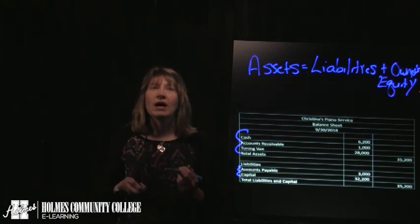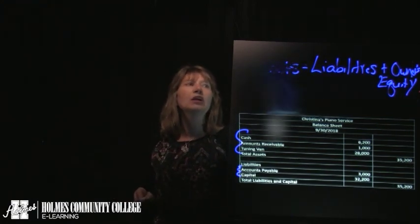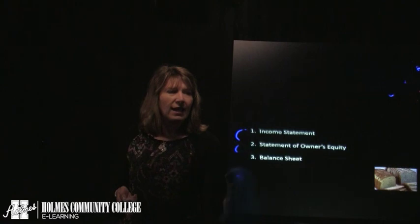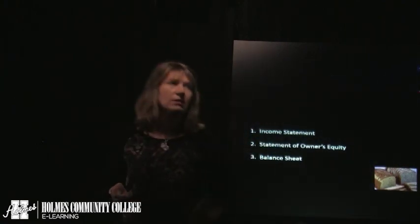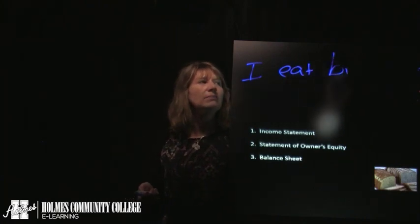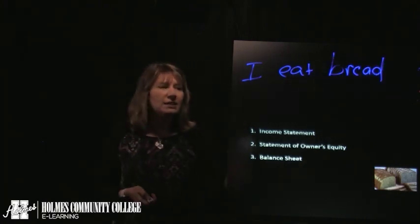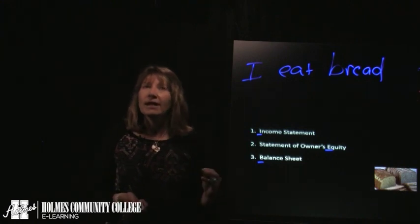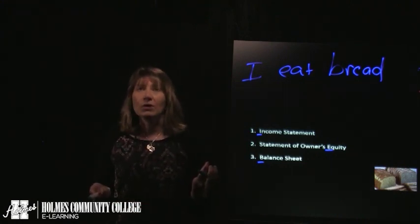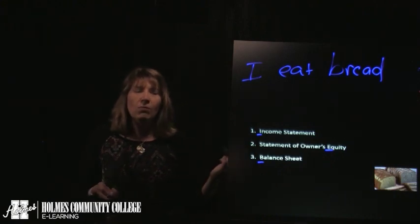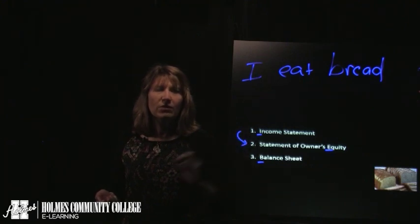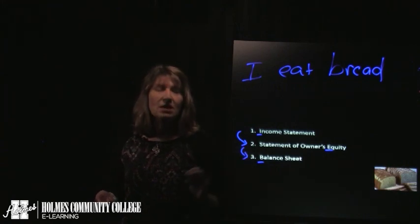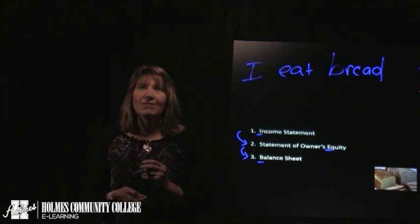These are the three primary financial statements. It's important to know the order in which we prepare them. You can remember it like this: 'I eat bread.' I stands for income statement, eat stands for equity, and bread stands for balance sheet. The reason the order matters is that we must first calculate net income because it flows to the statement of owner's equity. Then we calculate ending owner's equity because it flows to the balance sheet. I eat bread — that's why the order is so important.